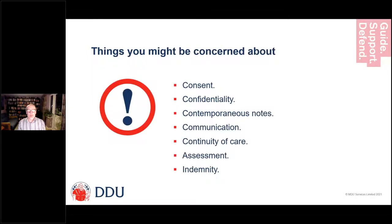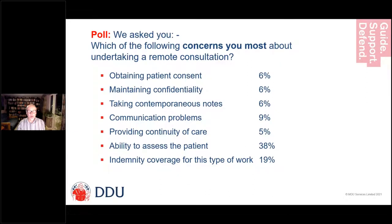When setting this up, we thought about things people might be concerned about: consent, confidentiality, contemporaneous records, communication, continuity of care, assessment, and indemnity. We asked people beforehand what their concerns were and the results were really interesting. The ability to assess the patient was the biggest concern, and indemnity was also a concern, while the others were lower.